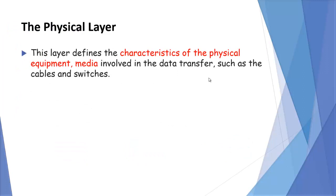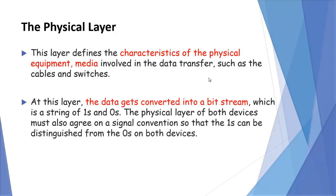This layer defines the characteristics of the physical equipment and media involved in data transfer, like cables and switches. At this layer, data gets converted into a bit string, which is a string of 1s and 0s.